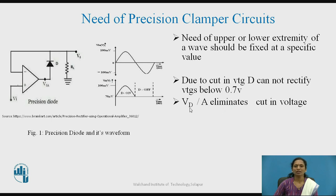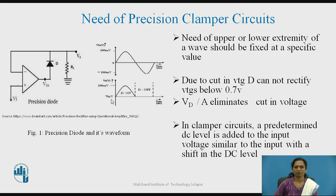The cut-in voltage of the diode divided by the open-loop gain eliminates the cut-in voltage, and therefore it can rectify signals in the range of millivolts or microvolts. This gives a pre-determined DC level while the signal swing — the total amplitude — remains the same. The need for precision clampers is to precisely shift the DC level and to preserve the signal's output voltage.